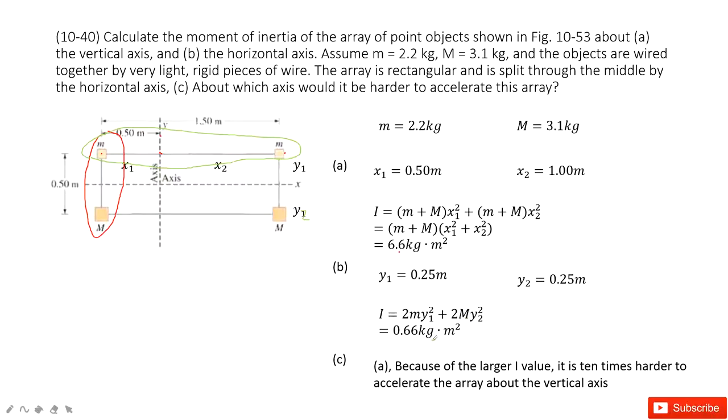Now we need to compare which one is larger. And which one, I, is larger and which axis will be harder to accelerate in this array? So which one is harder means which one needs more torque, right?